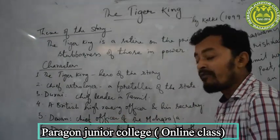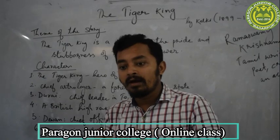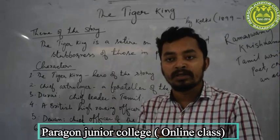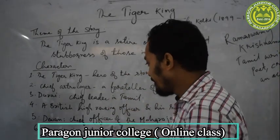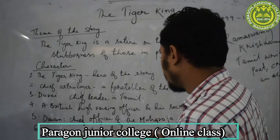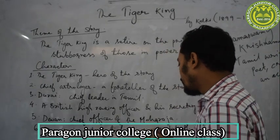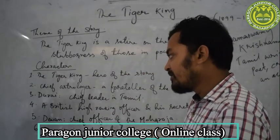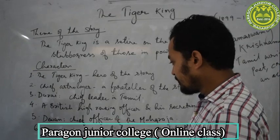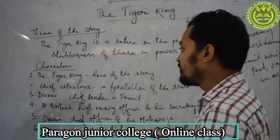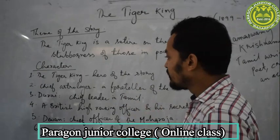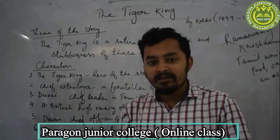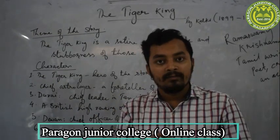Next comes Diwan — he is the Chief Officer of the Maharaja who spent most of the time with the Tiger King. The next character is Durai Sani, which means wife of the High Ranking British Officer. All the characters play important roles in the story, and Kalki has presented the story very beautifully.